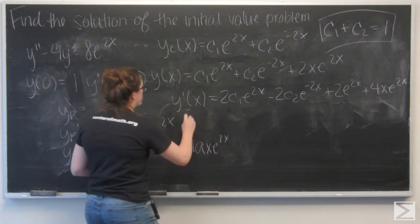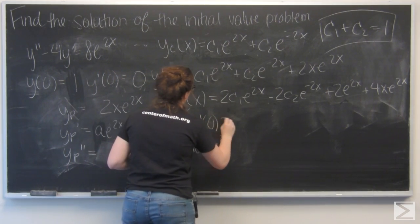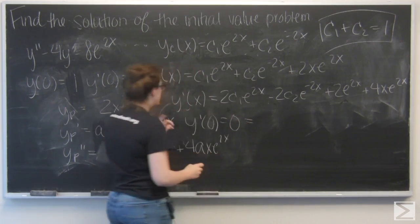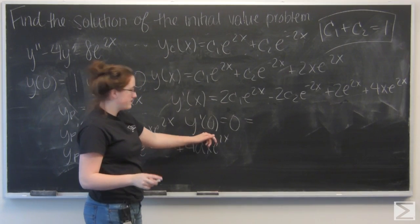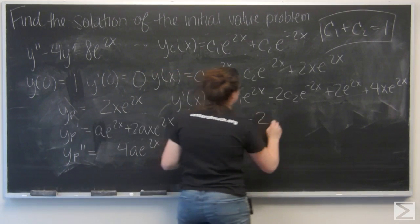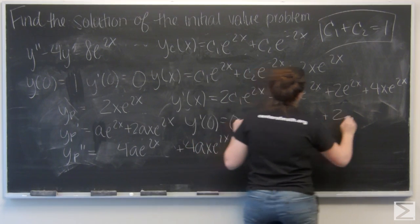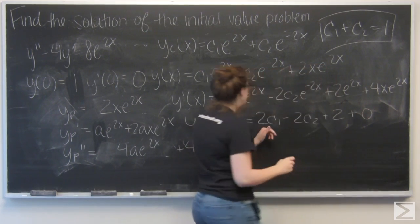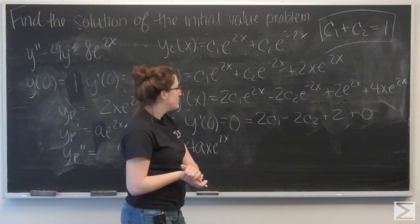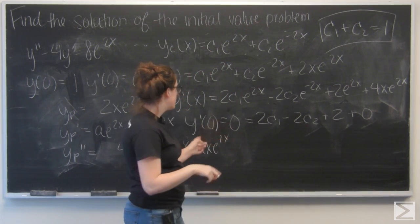Let's go ahead and plug in 0. We're told that y prime of 0 equals 0, so I have 2c1 minus 2c2 plus 2 equals 0.